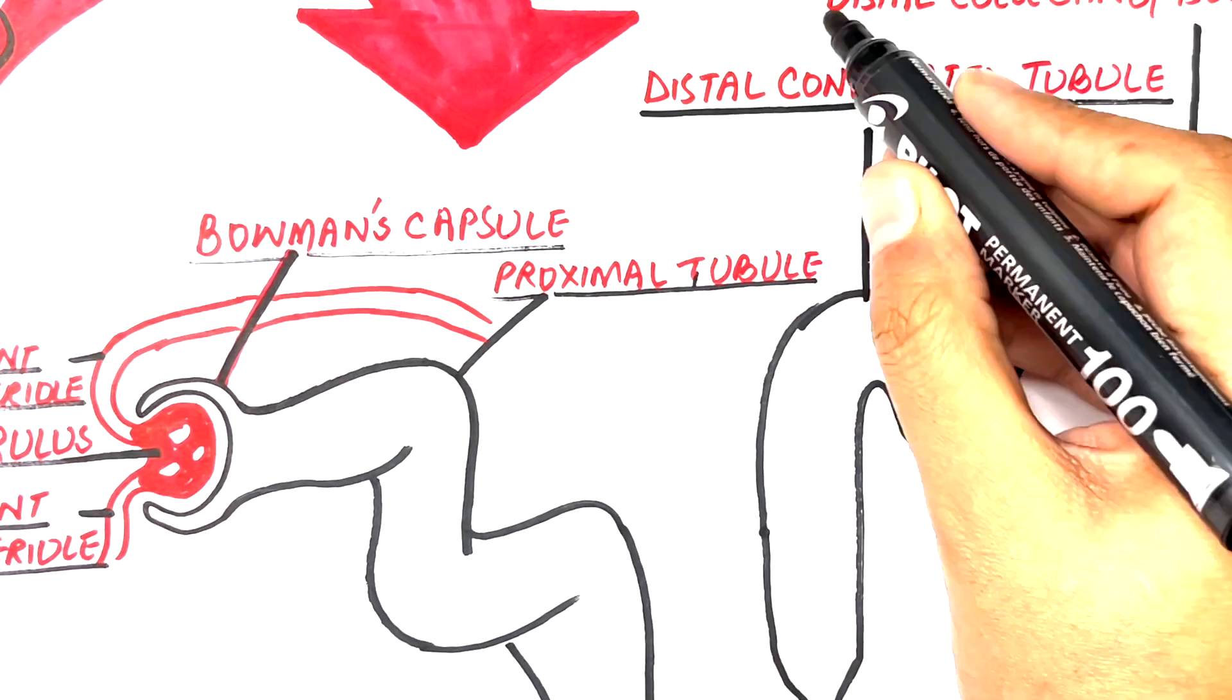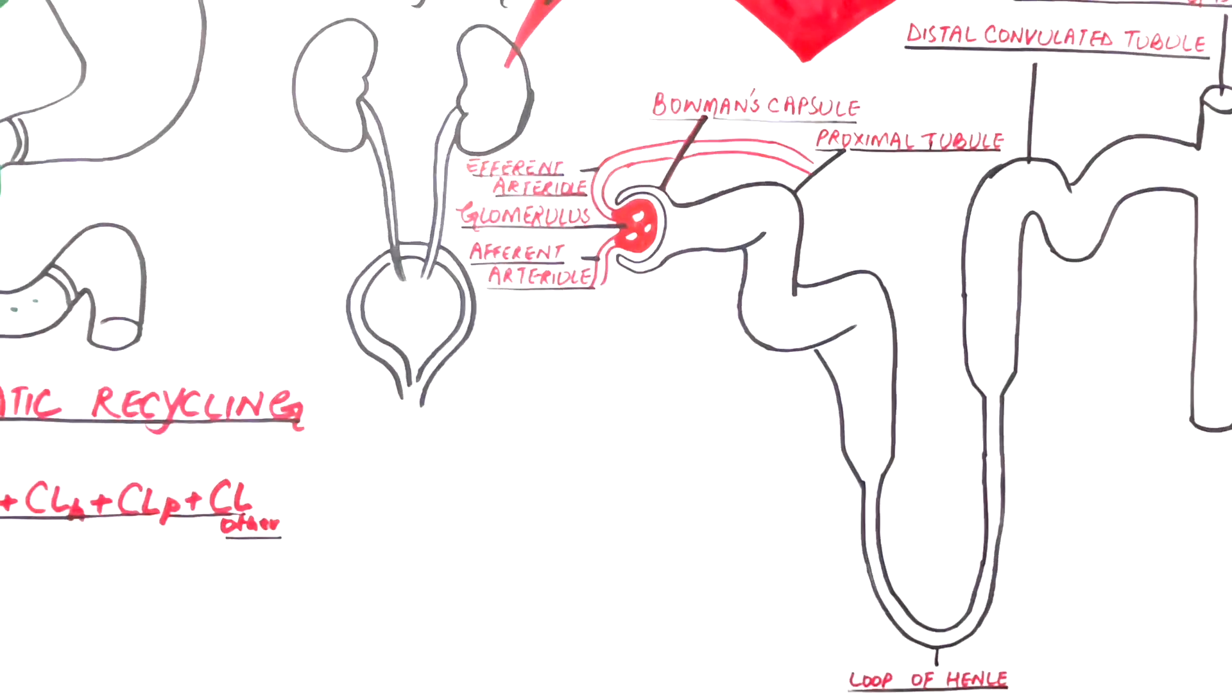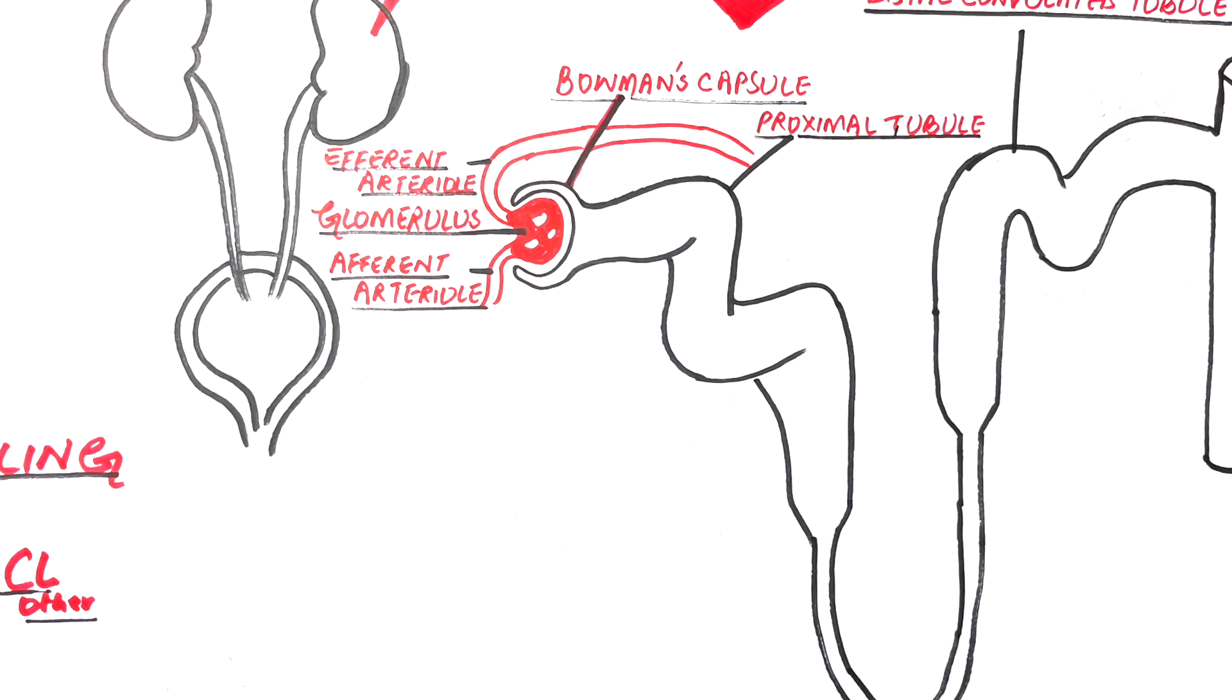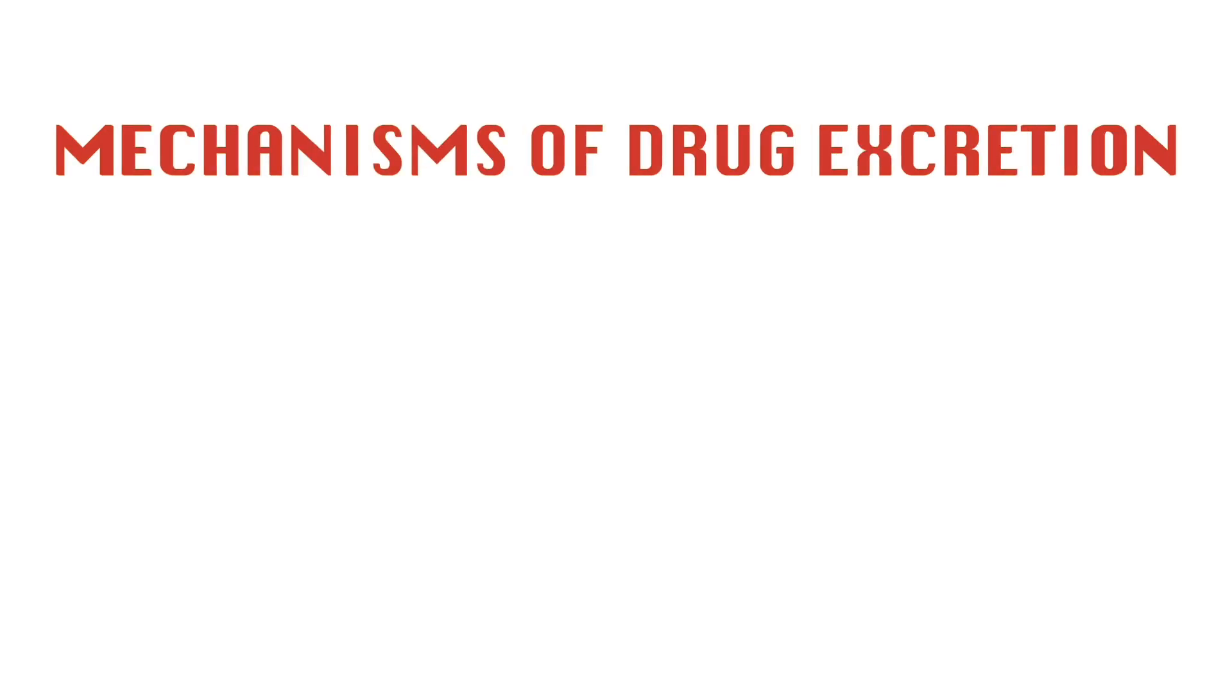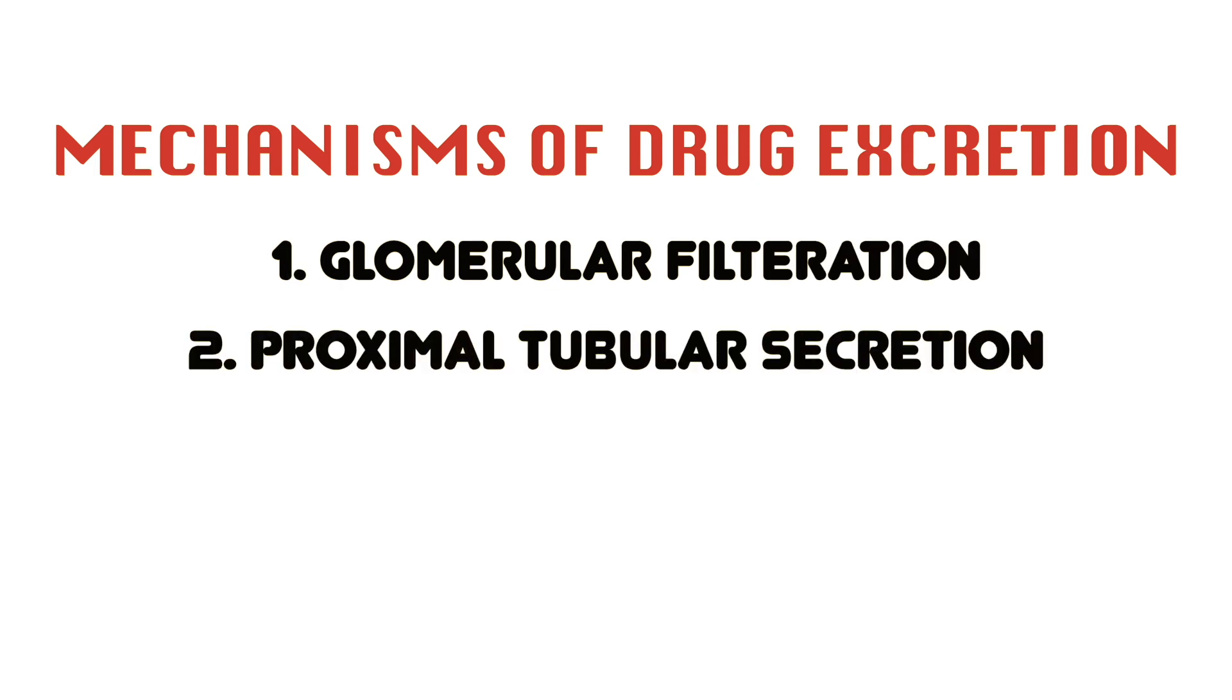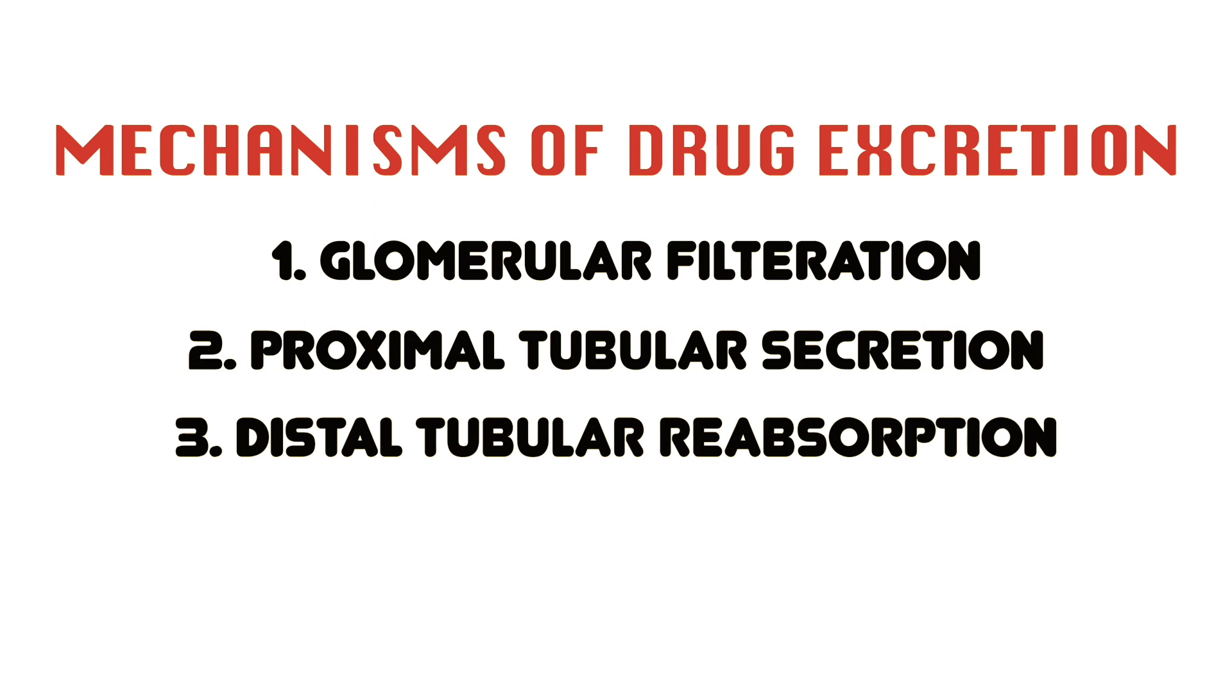Kidneys can only excrete water-soluble or hydrophilic and smaller compounds. The larger and more hydrophobic compounds are the responsibility of the liver to be excreted. Kidneys excrete a drug via three mechanisms: glomerular filtration, proximal tubular secretion, which is the active secretion of the drug from the blood into the proximal tubules, and distal tubular reabsorption, where the drug is reabsorbed back into the blood from distal convoluted tubules.